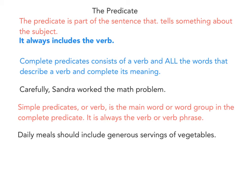The predicate is the part of the sentence that tells something about the subject, and it always includes the verb. The complete predicate consists of a verb and all of the words that describe the verb and complete its meaning. The predicate usually comes after the subject, but sometimes part or all of the predicate comes before the subject.